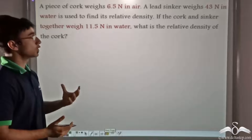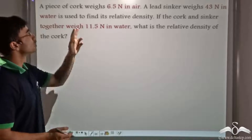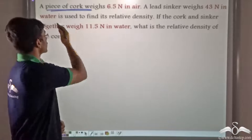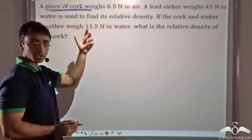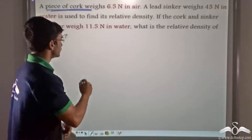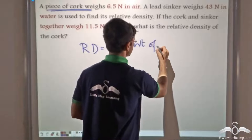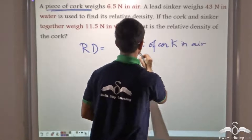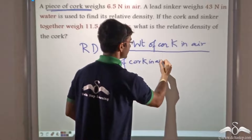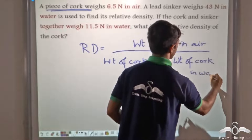Let us solve a simple problem to strengthen this concept. A piece of cork weighs 6.5 Newtons in air. A lead sinker weighs 43 Newtons in water and is used to find the relative density of the cork. If the cork and sinker together weigh 11.5 Newtons in water, what is the relative density of the cork? The formula is: weight of cork in air divided by weight of cork in air minus weight of cork in water.